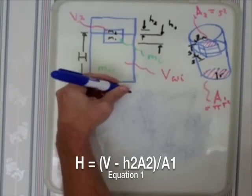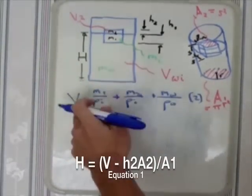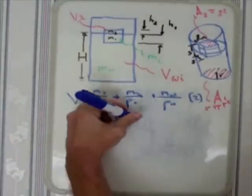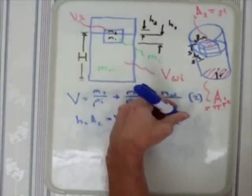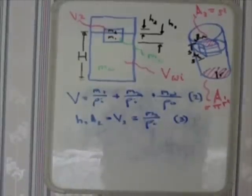Now looking at volume in terms of mass and density we have volume equals M1 over density of ice plus M2 over the density of ice plus MW over the density of water that gives us equation two. H2 equals V2 equals M2 over the density of ice that's equation three.